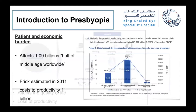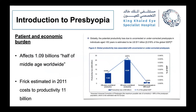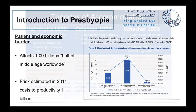Presbyopia affects 1.1 billion people worldwide, around 15 to 20 percent of the global population. In a study by Frick and his group, they estimated a loss of 11 billion dollars for the population between ages 40 to 55 due to presbyopia. This study was done in the US and concluded that the economic burden of presbyopia is huge. There are three theories that try to explain accommodation and presbyopia.